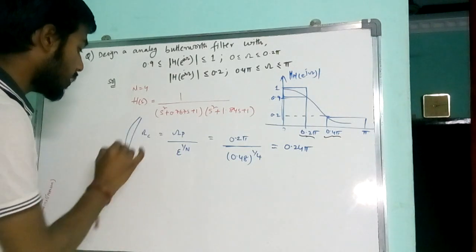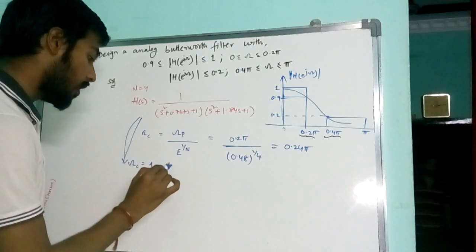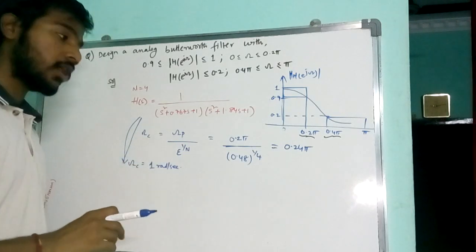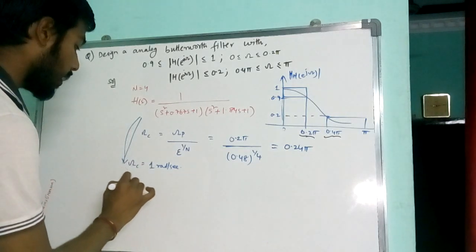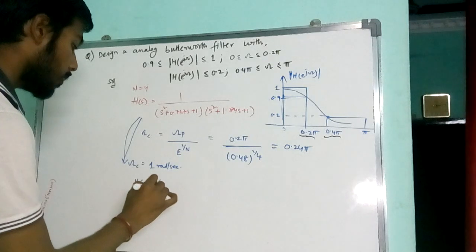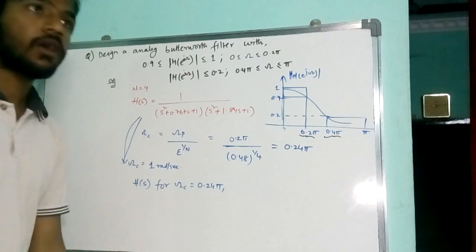As far as we consider this transfer function, this is for omega c equal to 1 radian per second. So we need to calculate the h of s for omega c equal to 0.245.